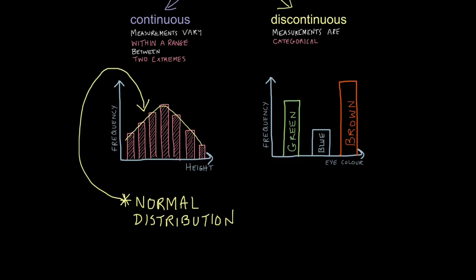Generally speaking, features which vary continuously are coded for by many genes, not just one. With discontinuous variation, I said measurements are categorical.